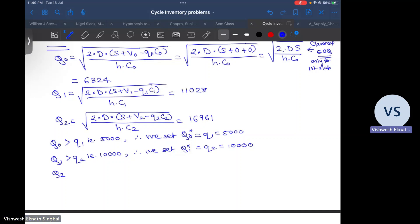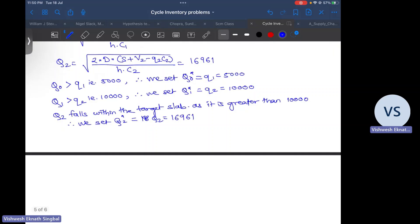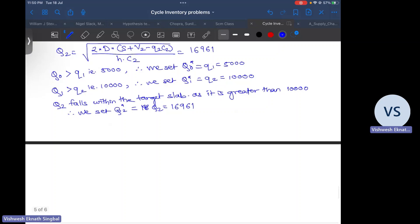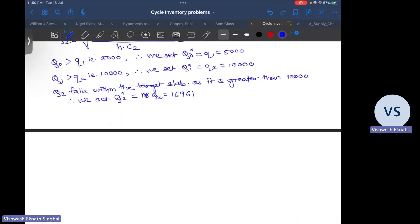Now q2, 16,961, falls in this slab. So what are we doing over here? What we are trying to do is we are forcing the quantity, the optimal quantity, to fall in one particular slab which we are targeting. So what next? We have found three quantities we call them optimal quantities, but we don't know which of these quantities will be the one which we order. Therefore, that decision will have to be taken after we consider the total cost.